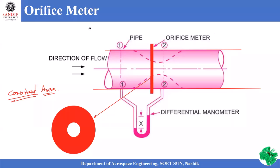The orifice meter construction has a constant area pipe with an orifice plate, which is a circular disc plate with an area drilled through it, creating an opening. This plate inserted into the pipe is called the orifice plate.